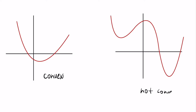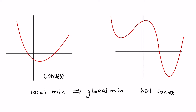You might notice something interesting about the non-convex function: it has two local minima, and one local minimum is not a global minimum. The global minimum, if the function extended to infinity on both sides, happens to be at a different point. However, in the convex function, we only have one local minimum, and that local minimum is a global minimum. So my friend asked: if you have a convex function, does a local minimum have to be a global minimum, and how would you actually argue that it has to be?